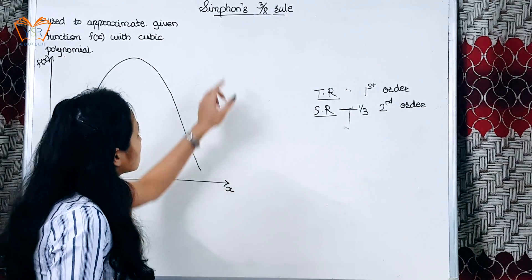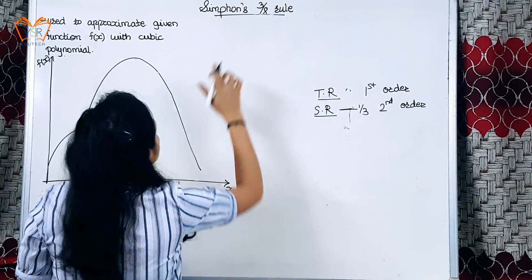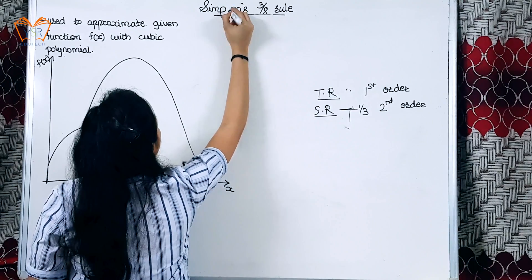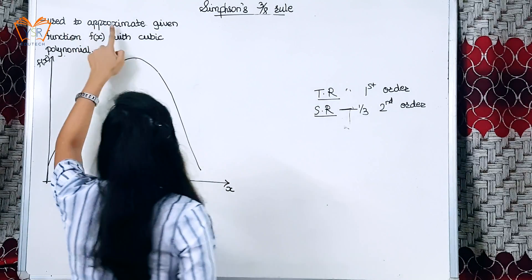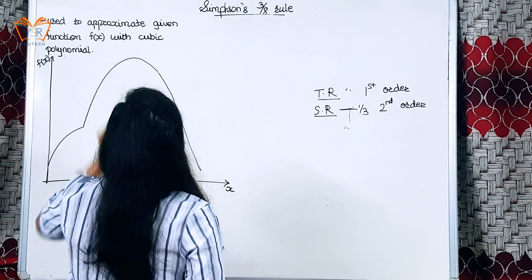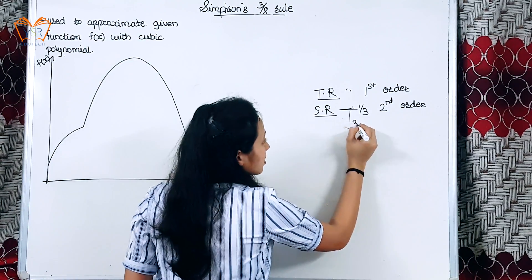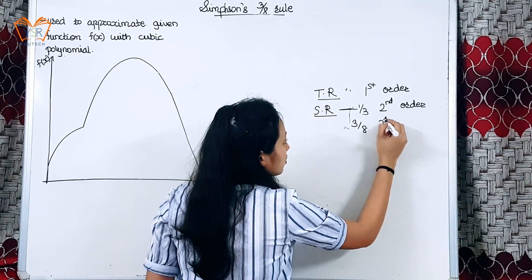In Simpson's three-eighth rule, the function will be approximated using cubic polynomial, that is third order polynomial.